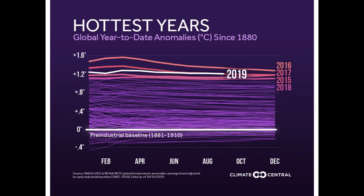This shows the temperatures averaged across the whole globe for every year. The white line — the zero — is scaled as the difference from the period 1881 to 1910, which has been set as zero. And you can see, again, here's 2016, the hottest year on record.